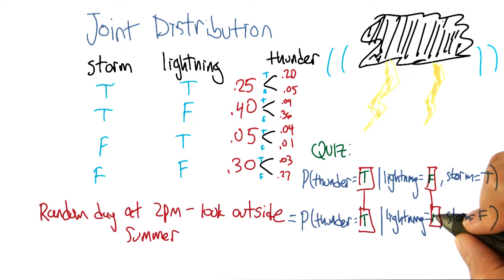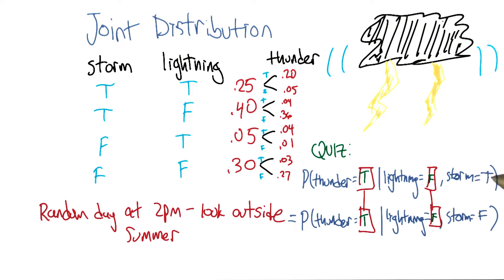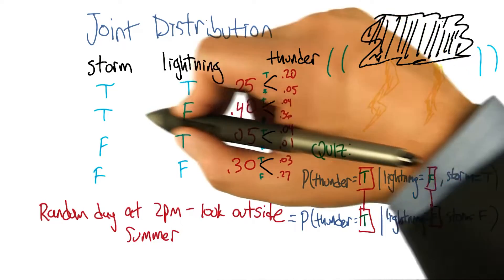Which is, it gets filled in in both places. So the probability that thunder is true, given lightning is false, and storm is true, what is that number? Well, we just have to find the place in our little eight row table where lightning is false and storm is true.